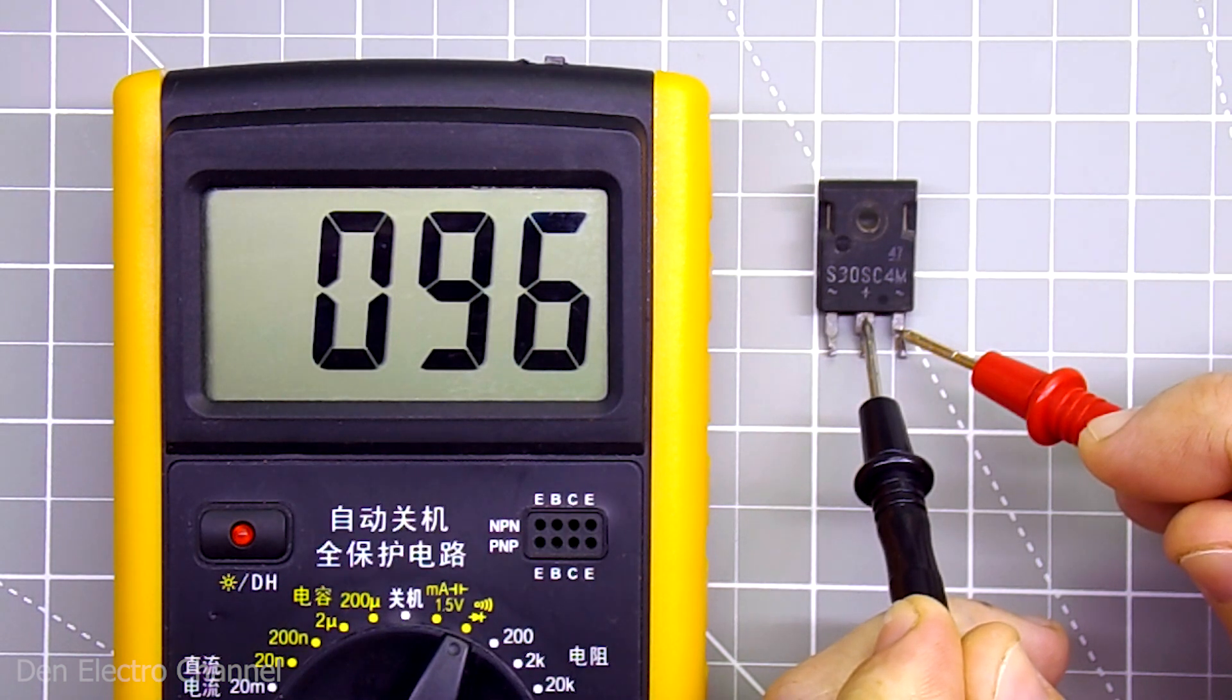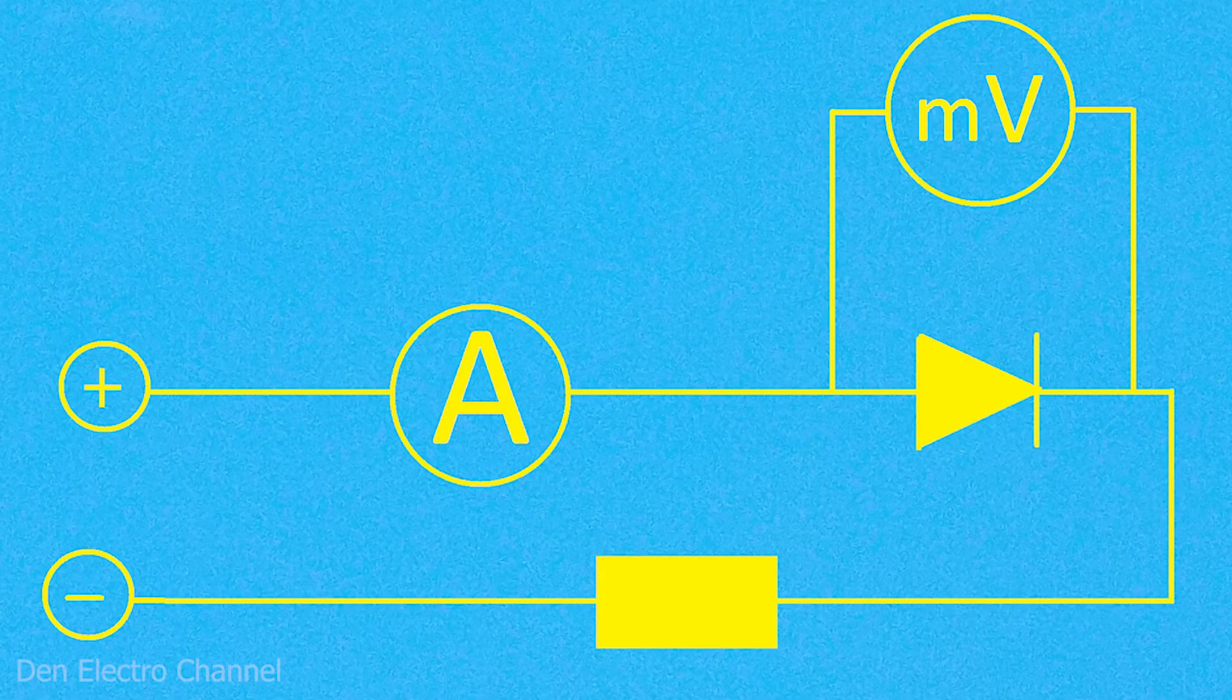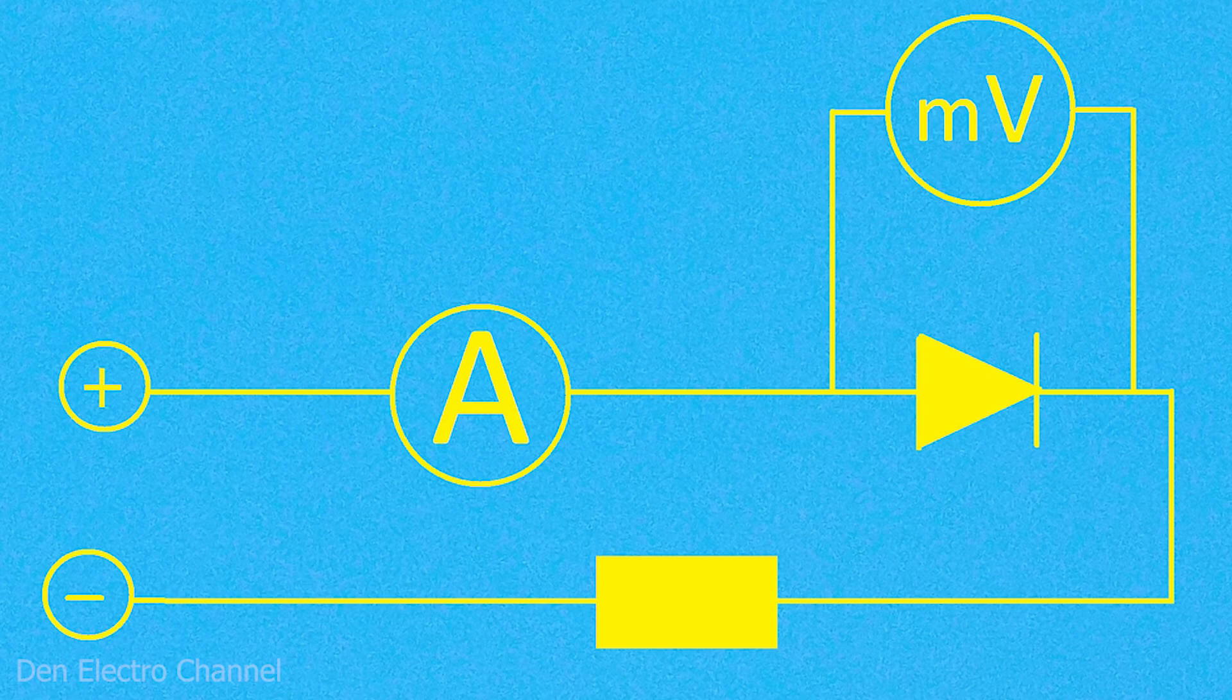However, this will only be the initial voltage, the voltage drop that occurs at approximately 10 milliamperes. To find out how the diode behaves at high currents, you need to assemble a small circuit.